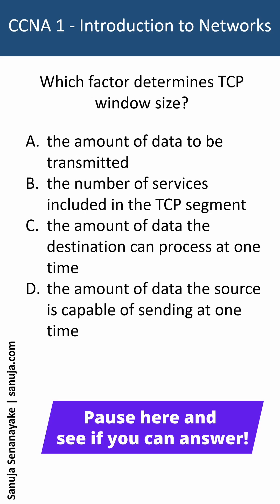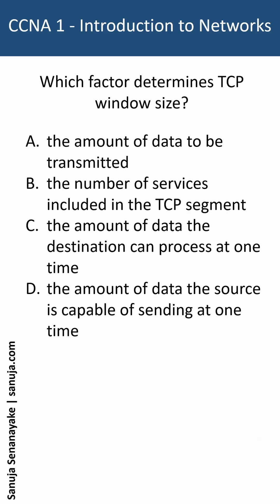The answer to this question lies in the differences between TCP and UDP. The answer is C — the amount of data the destination can process at one time.